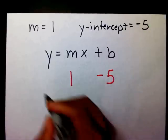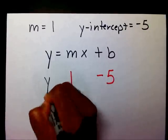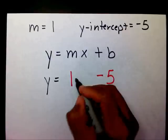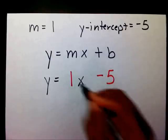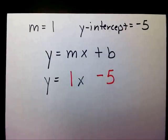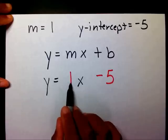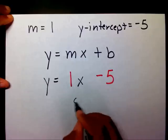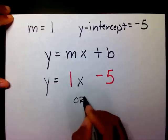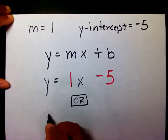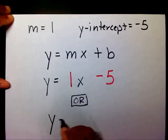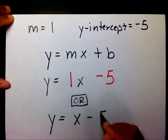I'll bring down my y equals and my x. Now, if I wanted to, I could simplify this even more. I know that if my coefficient is 1, I can either write it with the 1 or I can just say y equals x minus 5.